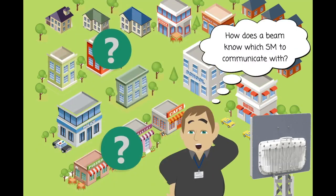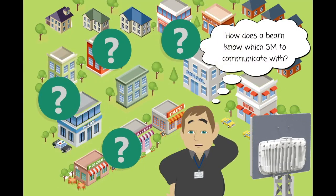But how does the beam know which subscriber is which? If there are a lot of subscribers in the area, wouldn't it get confused?